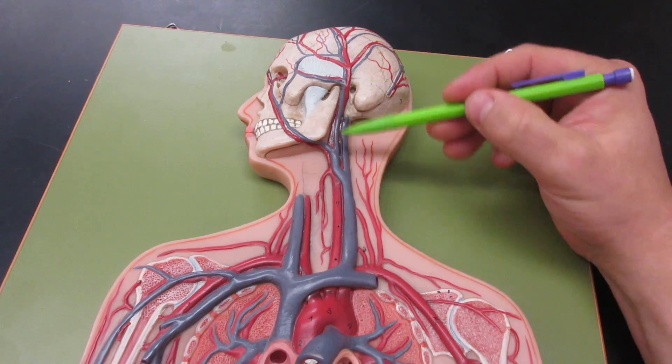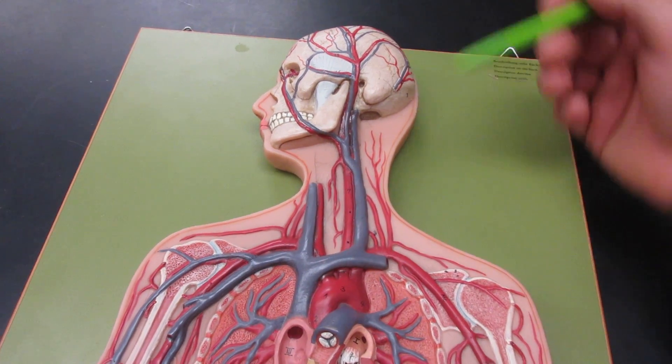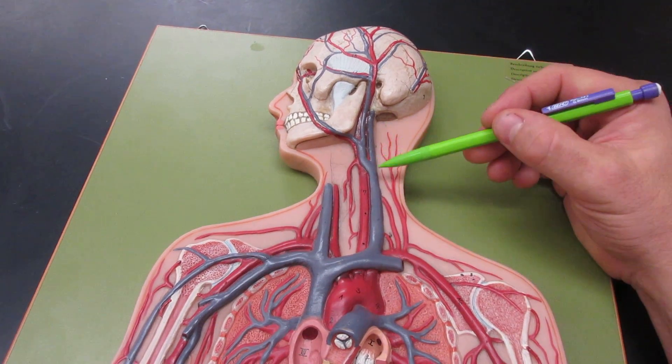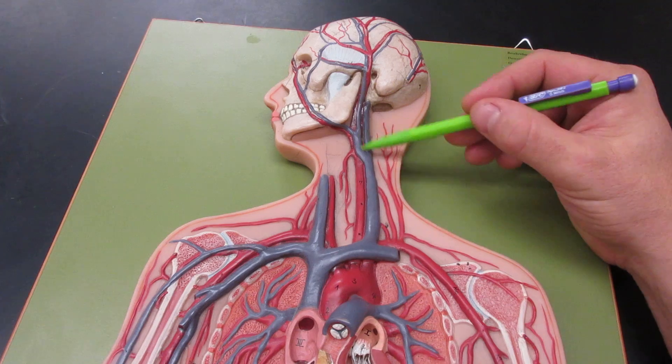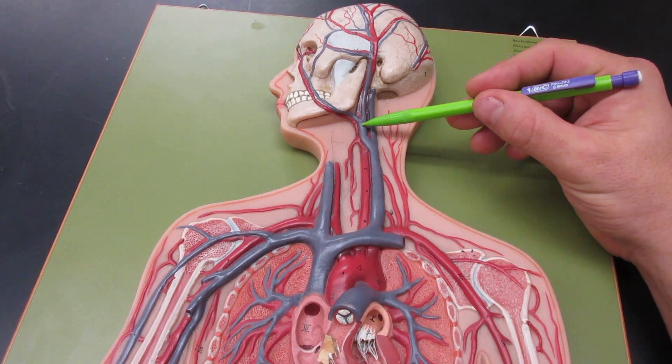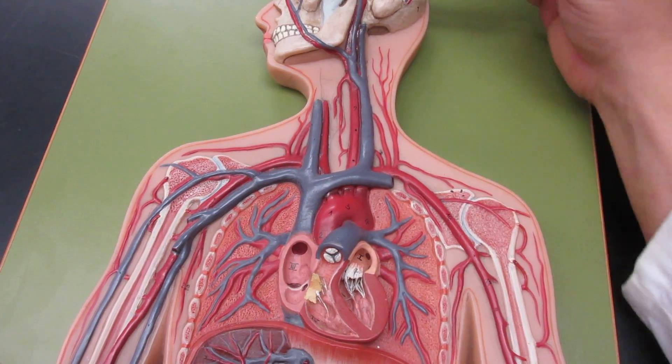Those all drain into the external jugular, which is shown coming here. The internal jugular vein drains inside the head, draining the brain. This model is not completely accurate because it shows these two vessels coming together, but in actuality the external and internal jugular both make contact with the subclavian.